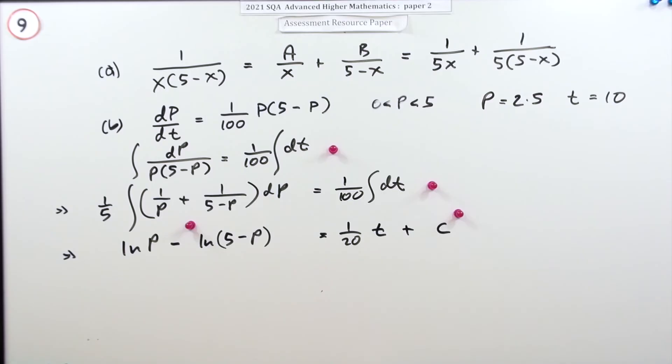Now we've got to find what this c is. Well, I could tidy that up a bit first of all, so that's ln of P over (5 minus P).